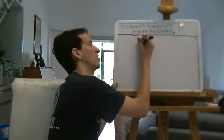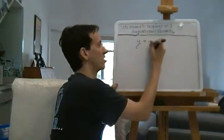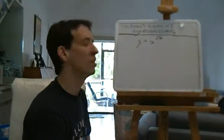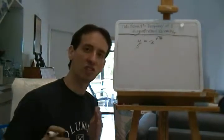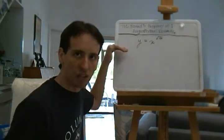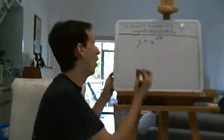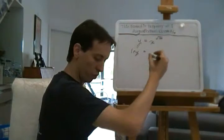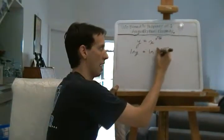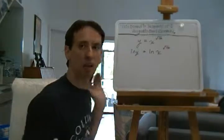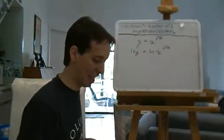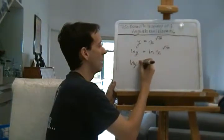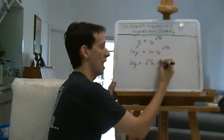Let's look at this very basic example: y equals x to the square root of x. That doesn't look like it's going to be too easy to do, so we're going to use logarithmic differentiation. First thing, we take the natural log of the left side and the natural log of the right side. So, ln y equals ln of x to the square root of x. Because of the law of logarithms, we can bring the exponent down: ln y equals square root of x times ln x.